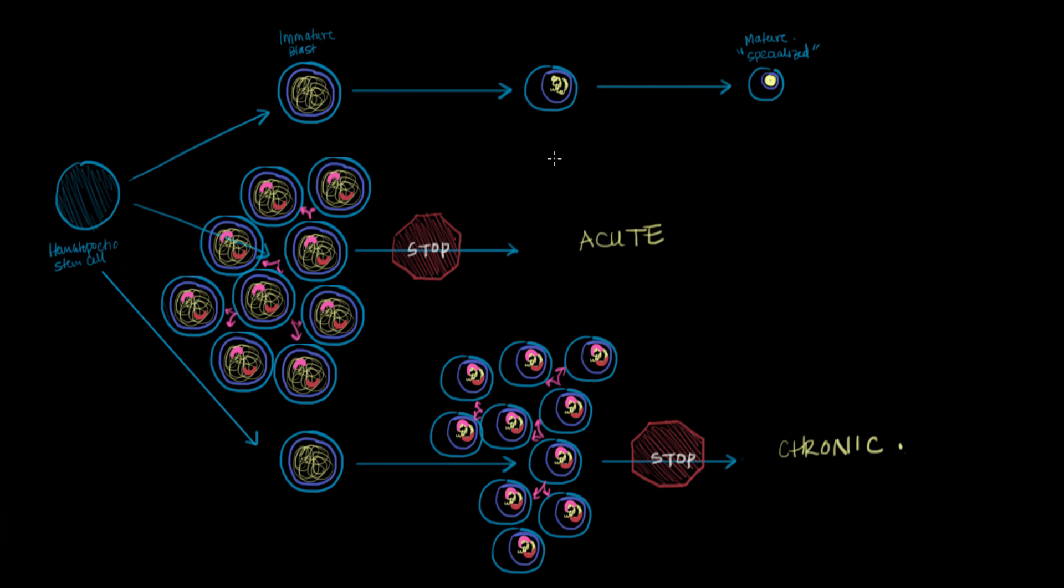Now, something else that I think this diagram does a pretty decent job of illustrating, is that when you have an acute leukemia, your leukemia cells look nothing like your mature specialized cells. I mean, they bear no resemblance whatsoever. And we said before that these cells perform almost no function. They're just kind of like a waste of space.